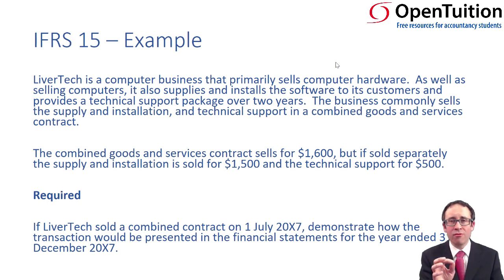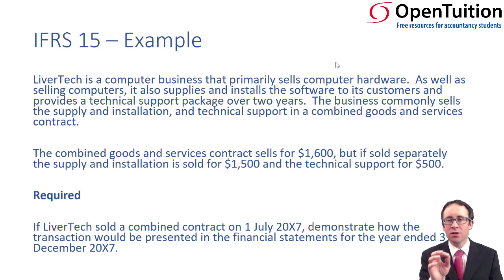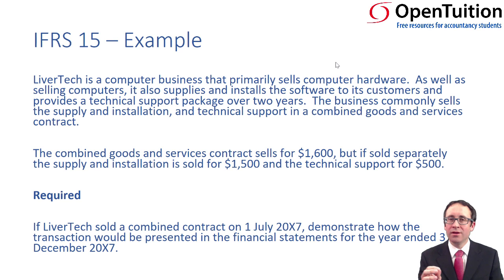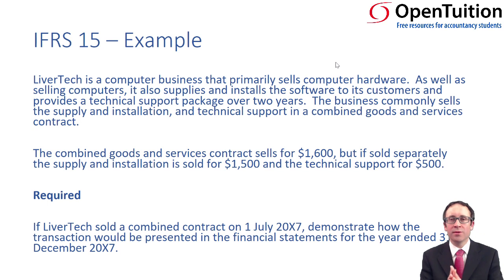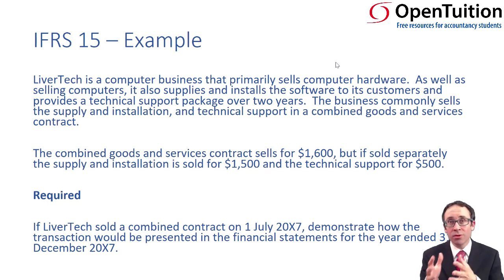We need to be really careful here with the dates in the question, because this contract that we've entered into with the customer is on the 1st of July. That's with six months of the year left. That's going to be really important when it comes to allocating and recognising revenue for the services over that six-month period, because we have a two-year contract, so we need to recognise six months out of that two-year period.